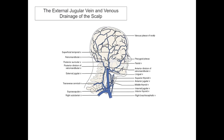One of the veins draining the scalp is our superficial temporal vein, which we see here. We also have a couple of veins draining the front of the scalp, known as our supratrochlear and supraorbital veins.